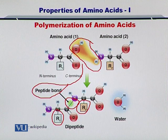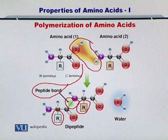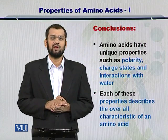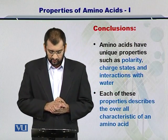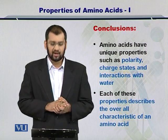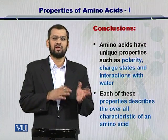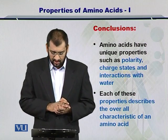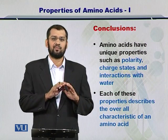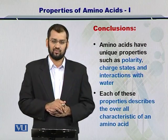So different R groups — different amino acids with different properties — come together in the form of a polymer which goes on to make the protein. This understanding is very important towards understanding the overall structural property of the proteins. Amino acids have properties such as polarity, charge states, and interactions with water — or simply hydrophobicity and hydrophilicity — and each of these properties taken together characterize the properties of the entire protein as well.